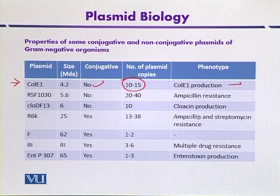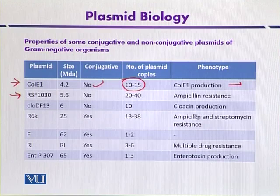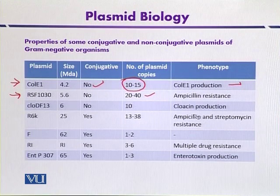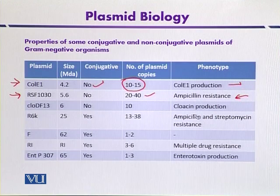Another example of a natural plasmid is RSF1030. It is also non-conjugative but has a very high copy number of 22 to 40, and contains genes for ampicillin resistance. Similarly, CLODF13 is a non-conjugative plasmid with 10 copies per cell and is also involved in the production of an antibiotic.